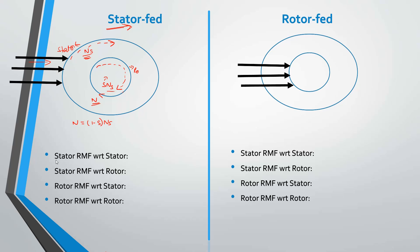Now we will calculate these speeds with respect to stator and rotor. The speed of the stator rotating magnetic field (RMF) with respect to stator is NS. Then the stator RMF with respect to rotor: stator RMF with respect to stator is NS, and since rotor is rotating with speed N we subtract N, giving us SNS.